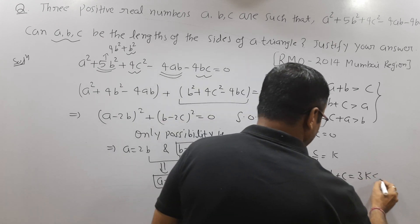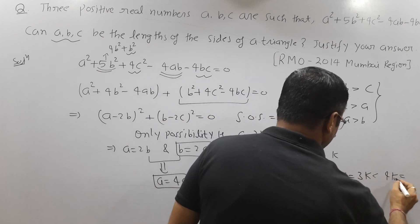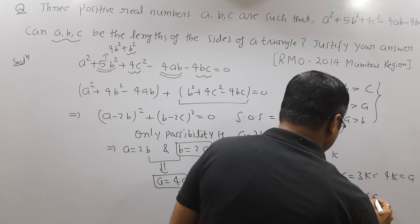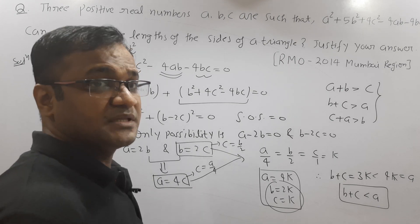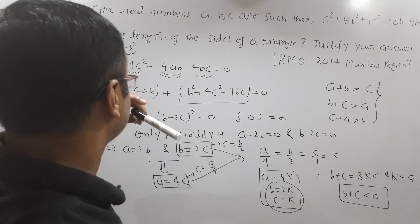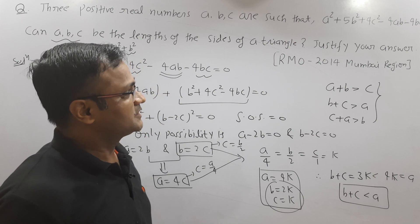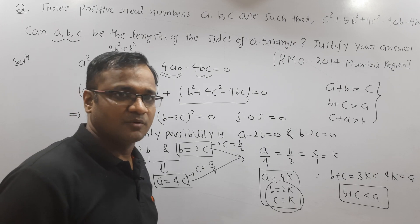b + c = 3k which is less than 4k, that is a. So b + c is less than a, and the triangle law is violated. It means that a, b, c cannot represent the side lengths of a triangle. That's the proof of this problem. Thanks for watching.